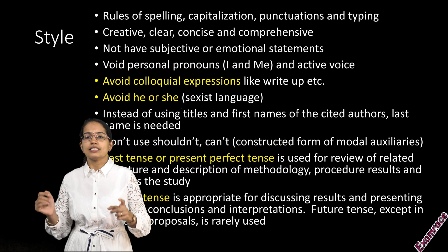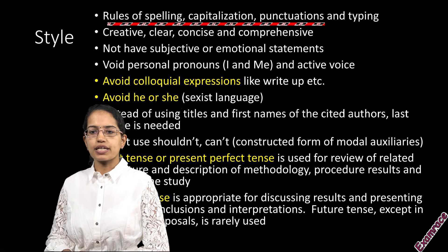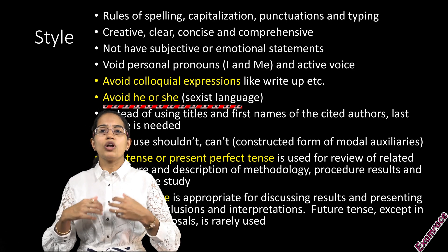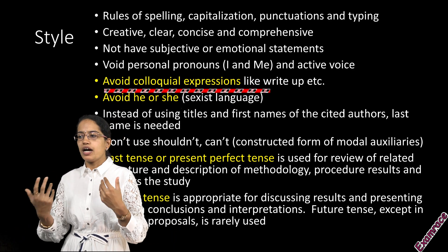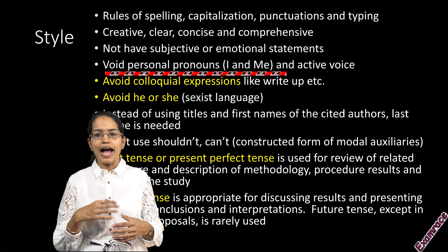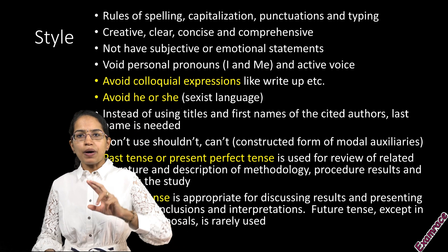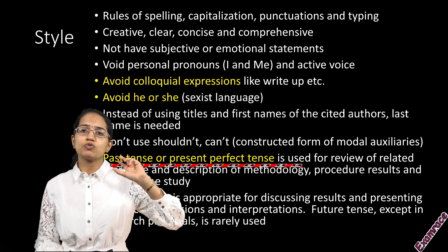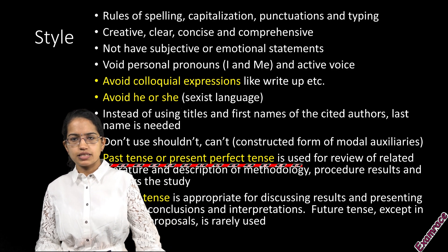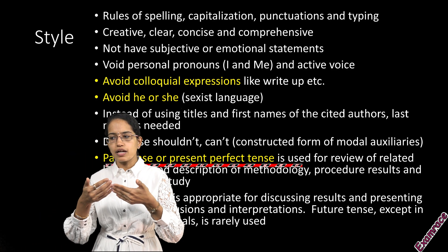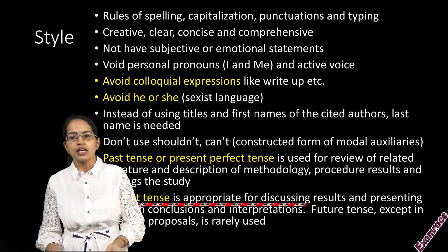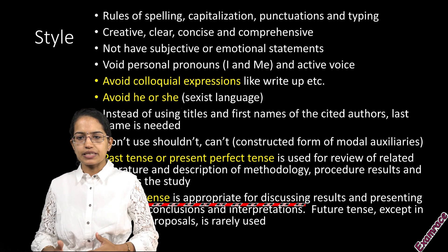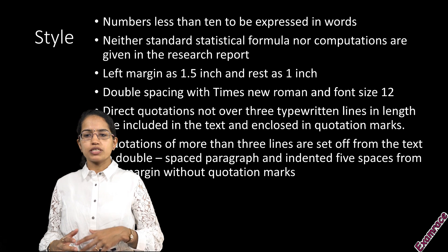Regarding style: spelling, grammar, and capitalization should be correct. Font size should be correct. He or she is not usually used. Colloquial sentences are not used. We avoid pronouns like I and me. Active voice is avoided. Past tense or present perfect tense is used for literature review, methodology, and results. However, for conclusions, you use present tense, and for recommendations, you use future tense. These are very important style considerations.